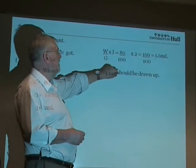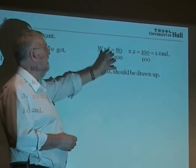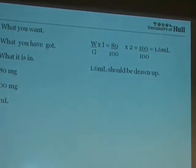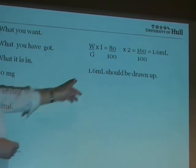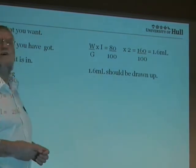That's 80 over 100 times 2. 2 times 80 is 160, 160 divided by 100 is 1.6 millilitres. 1.6 millilitres of the drug should be drawn up.